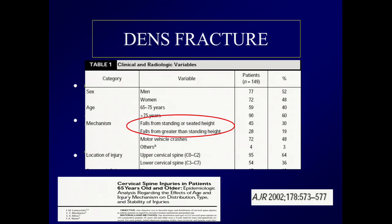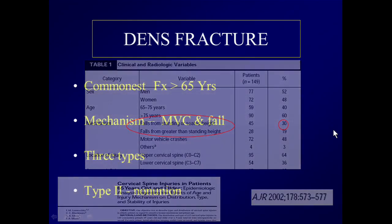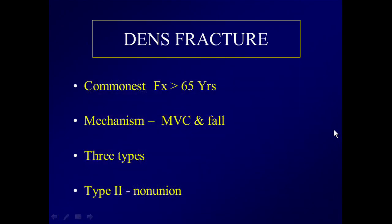So anybody above 60 who has a fall is at high risk for a cervical spine fracture. Don't hold back doing a CT if you're not sure what's going on on radiographs. There are three types of dens fractures, which we'll go through shortly. The Type 2 fracture is notorious for non-union.